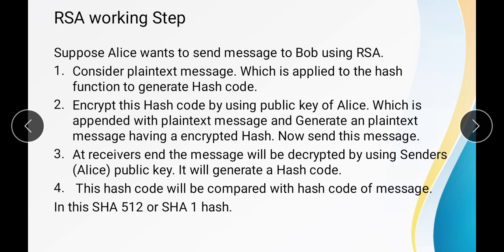Let us start with the first one, that is RSA. Suppose Alice wants to send the message to Bob using RSA. He will follow the following steps for encryption and decryption. First, consider the plain text message, which is applied to the hash function to generate a hash code. In the second step, that hash code is encrypted — here we are generating a hash code of the message. Then, send this message to the receiver.